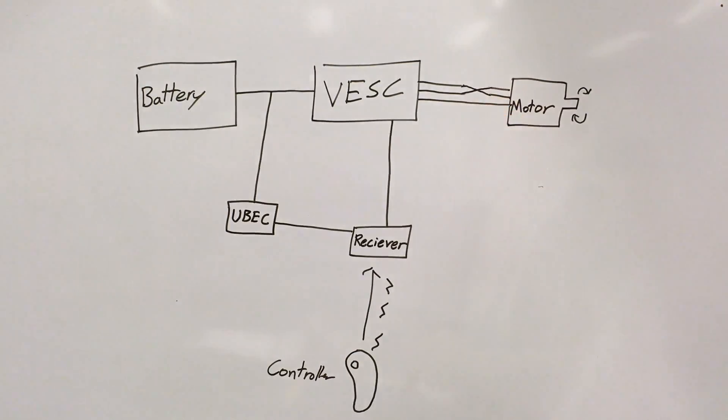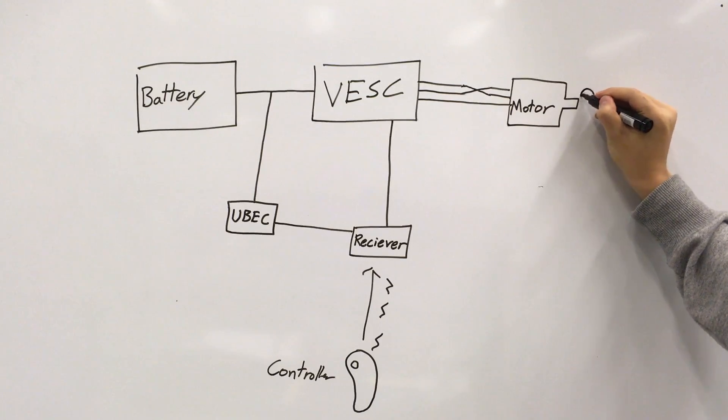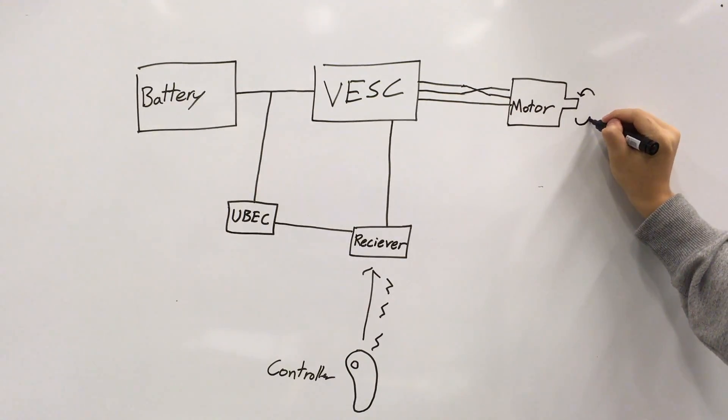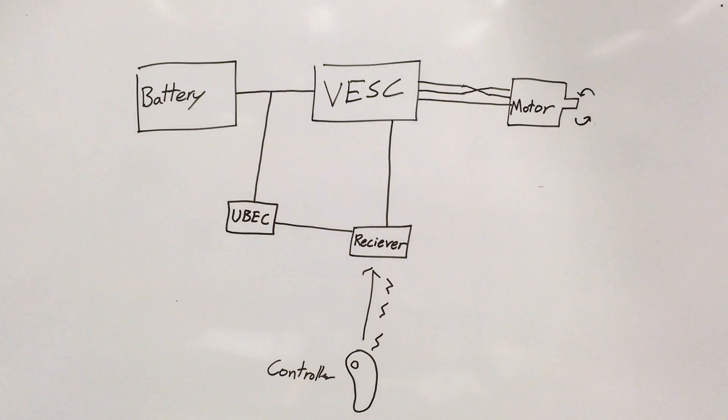So to fix this problem, all you need to do is switch any two lines of the VESC. And this allows for the motor to start spinning in the opposite direction. Because as I said before, the VESC just swaps two lines at a time.